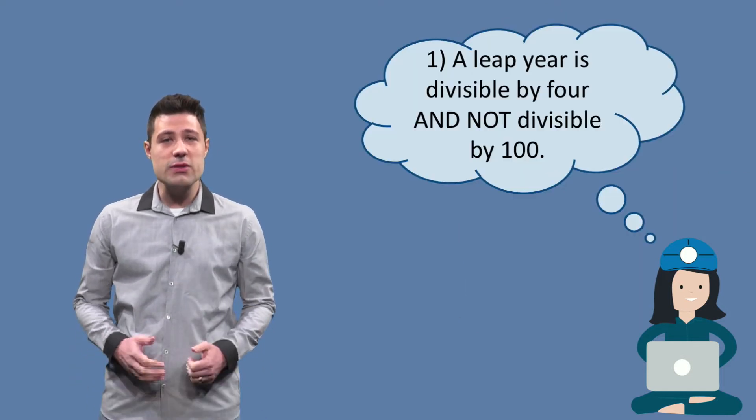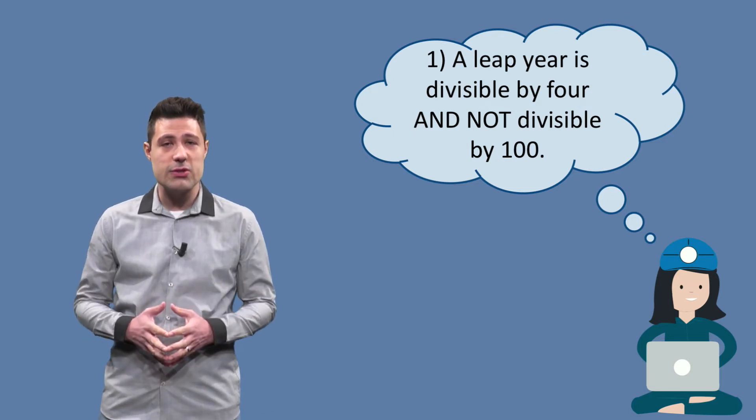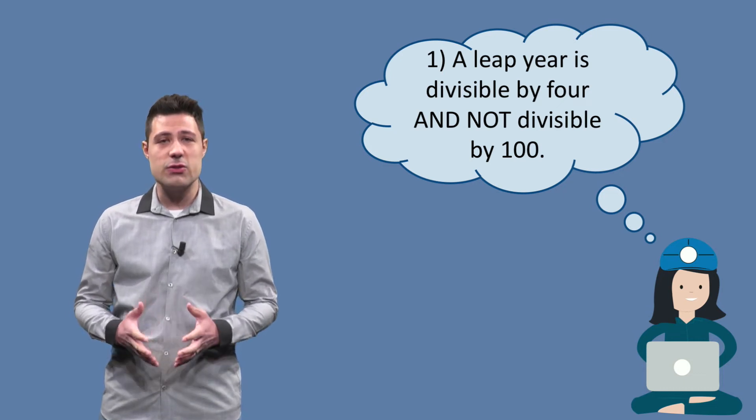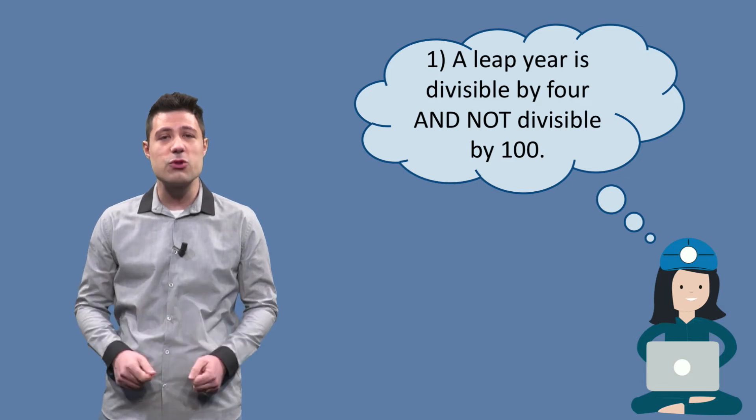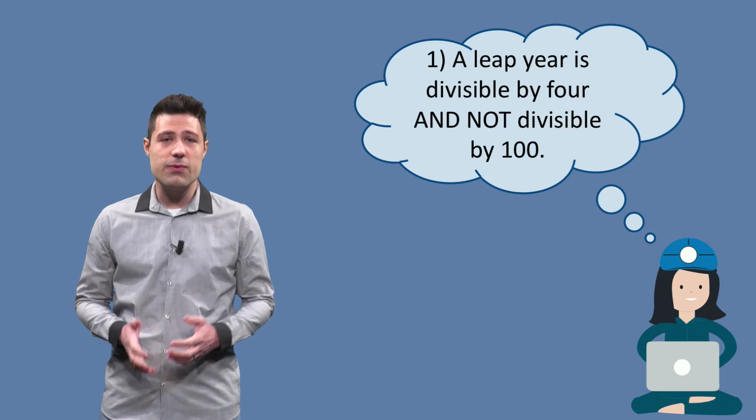For example, if we give 2016 to our program, it has to respond true, yes, this is a leap year. If we generalize this 2016, we are here testing whether the program responds correctly to a year that is divisible by 4 and not divisible by 100.